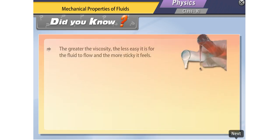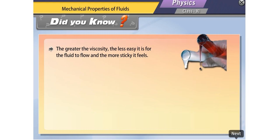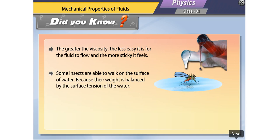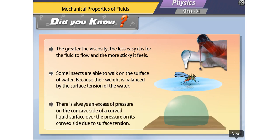Did you know? The greater the viscosity, the less easy it is for the fluid to flow and the more sticky it feels. Some insects are able to walk on the surface of water because their weight is balanced by the surface tension of the water. There is always an excess of pressure on the concave side of a curved liquid surface over the pressure on its convex side, due to surface tension.